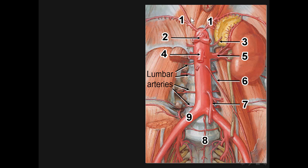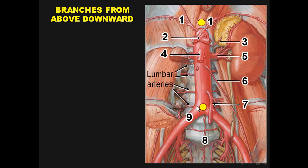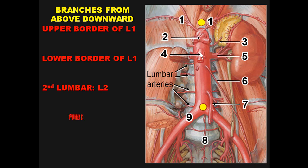The third organization arranges branches from above downward. Origin: continuation of the thoracic aorta opposite T12, behind the median arcuate ligament of the diaphragm. Termination: opposite L4, by dividing into two common iliac arteries. Branches are organized by vertebral level: upper border of L1, lower border of L1, L2, L3, and L4.